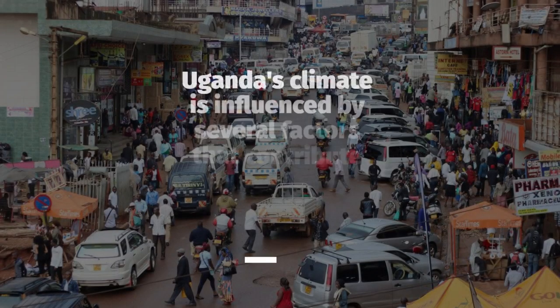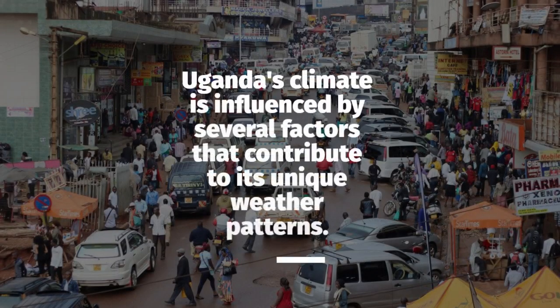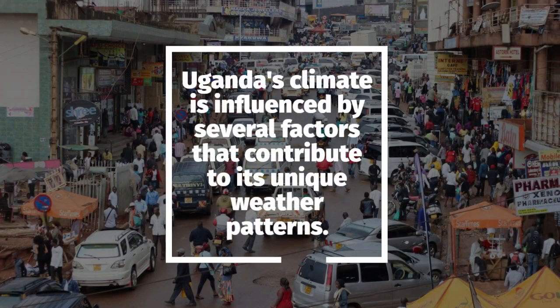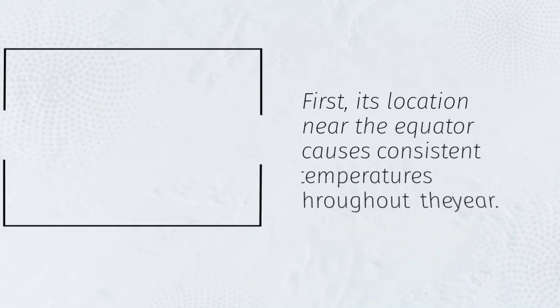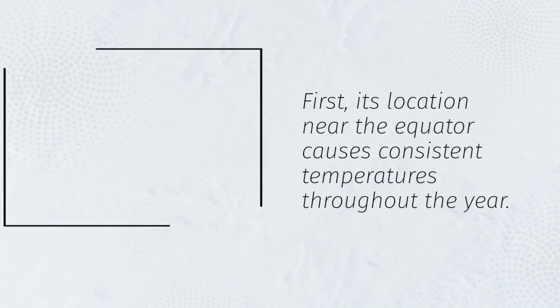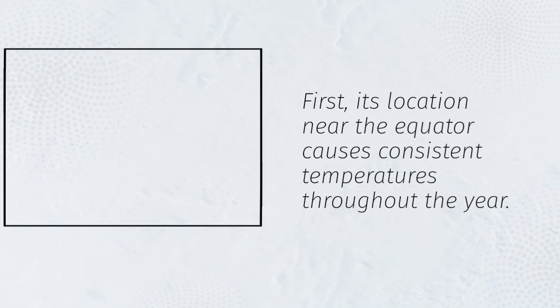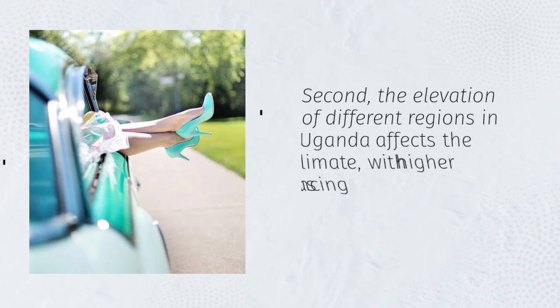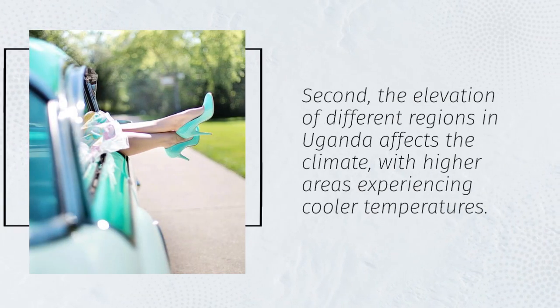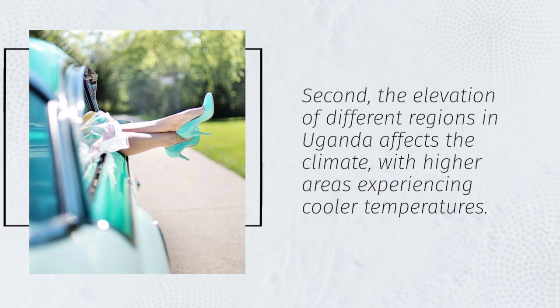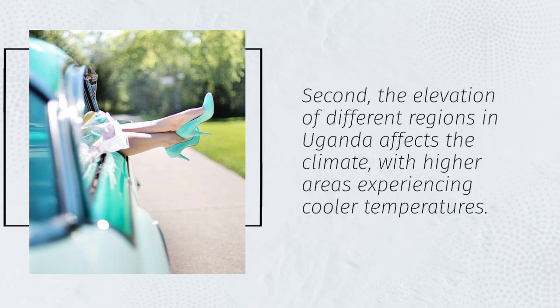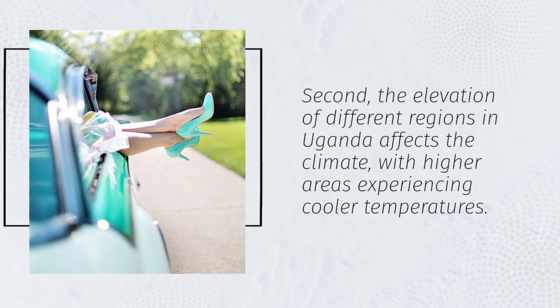Uganda's climate is influenced by several factors that contribute to its unique weather patterns. First, its location near the equator causes consistent temperatures throughout the year. Second, the elevation of different regions in Uganda affects the climate, with higher areas experiencing cooler temperatures.